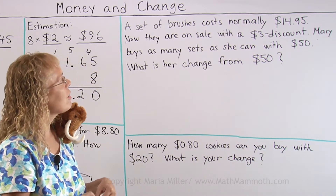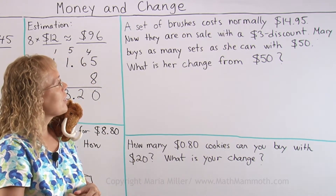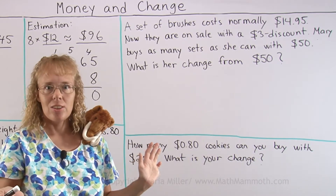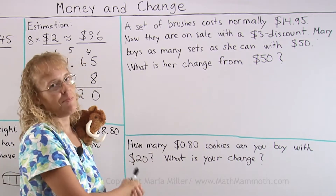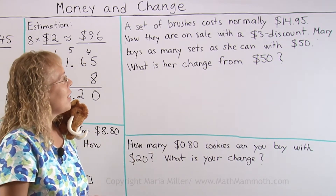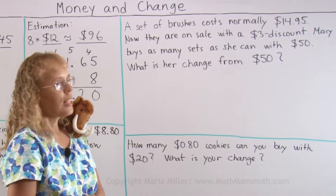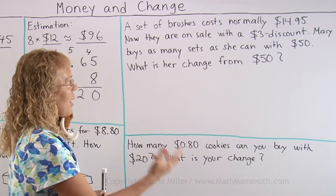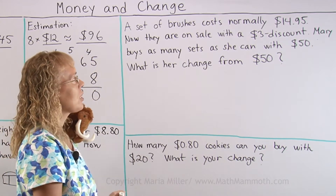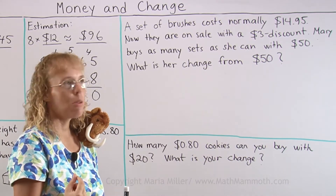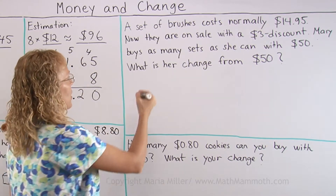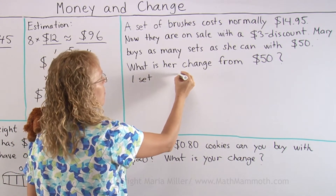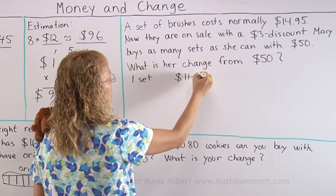There are many things going on here — there are brushes and they cost a certain amount, there's a discount, and Mary has $50 and wants to buy as many as she can. Let's get started with something easy: the price of the brushes. The brushes now cost $11.95 with the discount, so one set of brushes costs $11.95.